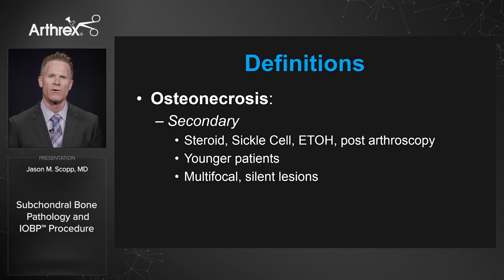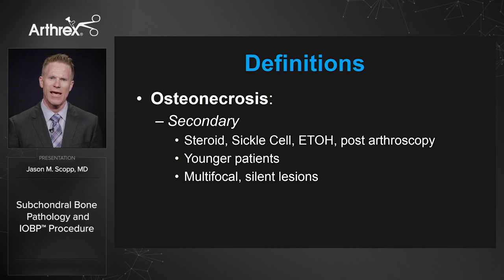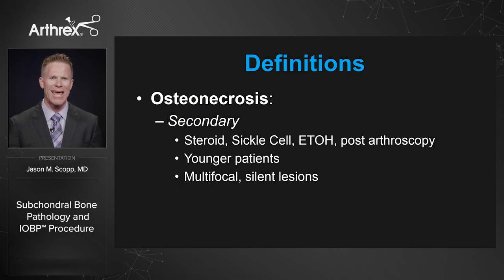What is secondary osteonecrosis? Primary osteonecrosis has to do with an insufficiency fracture and its end result. Secondary osteonecrosis has to do with steroid use, sickle cell anemia, alcohol abuse, and sometimes post-arthroscopy. These tend to occur in younger patients and often tend to be multifocal and can even be silent lesions.